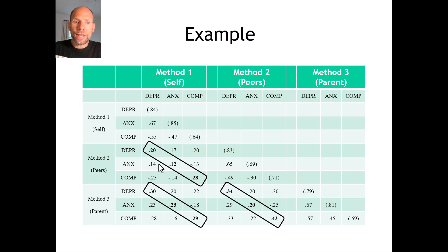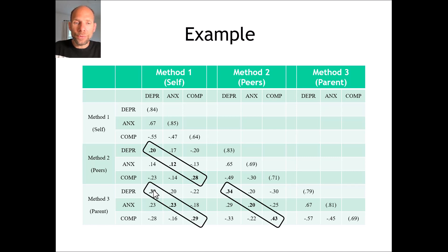More important is the portion of the criterion stating these should be sufficiently large. Campbell and Fisk provide no further guidance as to what sufficiently large means, but here we could say these aren't very large, indicating convergent validity is not very good. This is probably because depression and anxiety are internalizing problems that are not so visible, making it difficult for peers and parents to assess whether a child is depressed or anxious. So with regard to the first criterion, these correlations are probably statistically significant given a large enough sample, but their magnitude is not ideal.